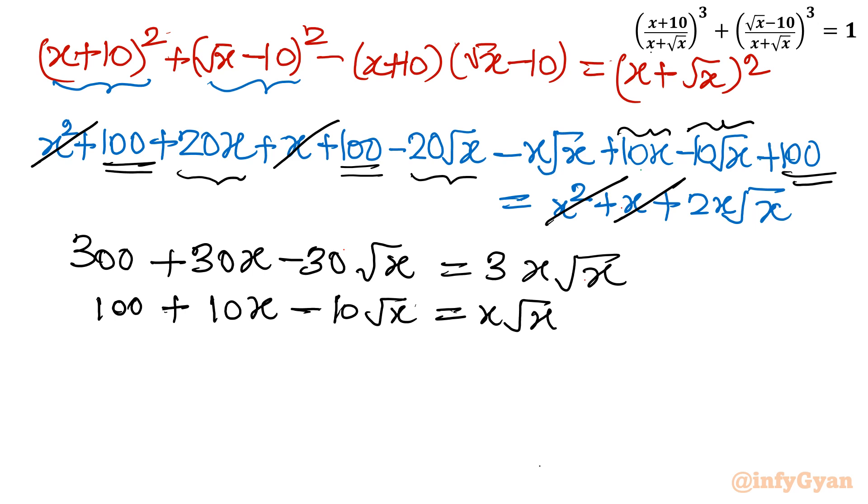Now you can see this equation is divisible by 3. So equation will be: 100 + 10x - 10√x = x√x. Now consider all the terms to one side, or better is to give substitution. So I will give substitution: x = a², root x in other words is a. Let us apply: 100 + 10a² + 10a = a³.